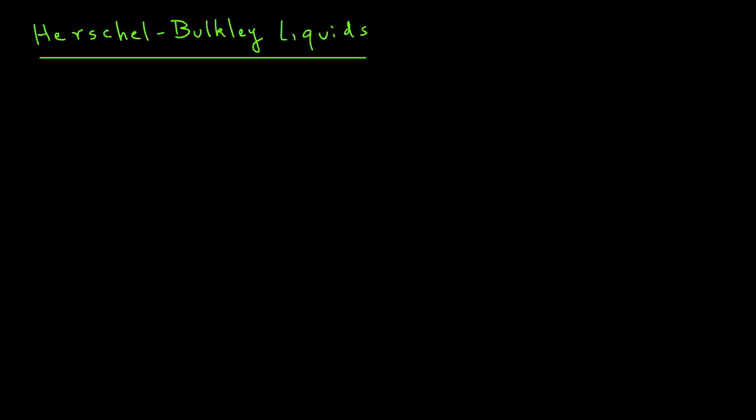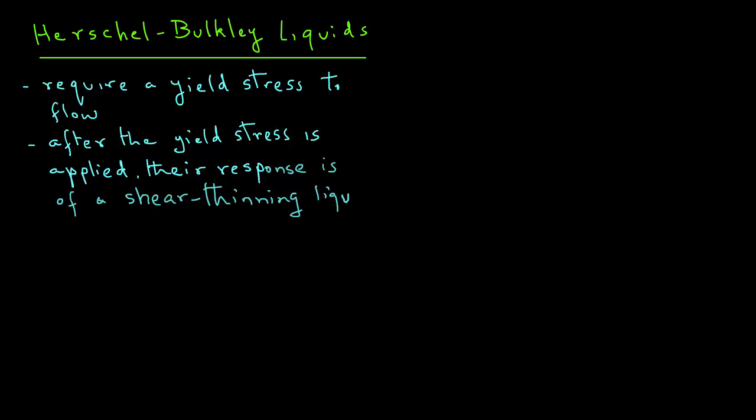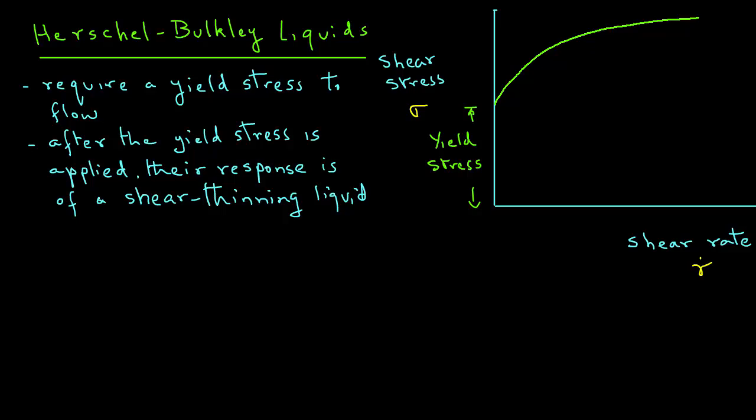Herschel-Berkeley liquids require a yield stress to flow, and after the yield stress is applied, their response is of a shear thinning liquid. So if we look at a plot of shear stress versus shear rate, the Herschel-Berkeley liquids need a certain amount of yield stress to begin the flow. The plot begins on the y ordinate after a certain amount of yield stress is applied, and then it is a non-linear curve to show that it has a shear thinning behavior.